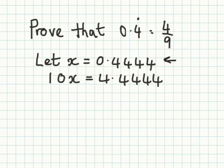At this point we can now see we have x and 10x. If we subtract x away from 10x we get 9x. If we subtract 0.4444 away from 4.4444 we get just 4.